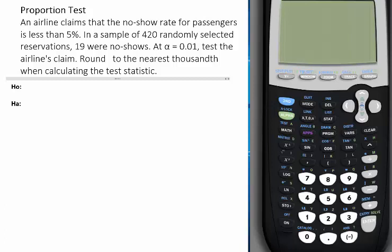In this example, I'm going to show you how to perform a test for the population proportion using the calculator. An airline claims that the no-show rate for passengers is less than 5%. In a sample of 420 randomly selected reservations, 19 were no-shows. At alpha equals 0.01, test the airline's claim, round to the nearest thousandth when calculating the test statistic.